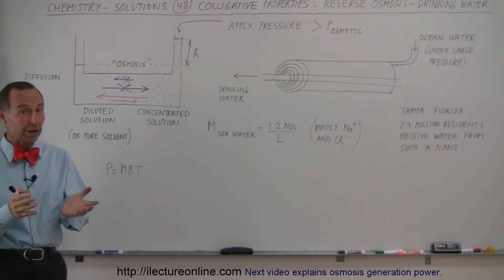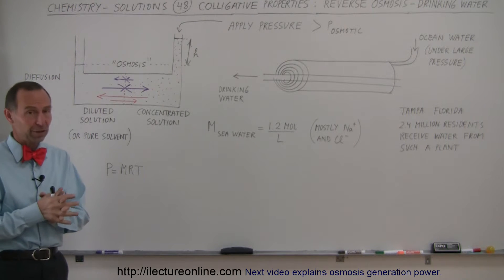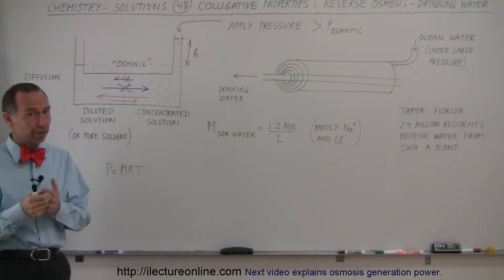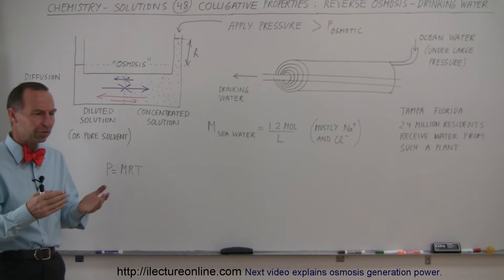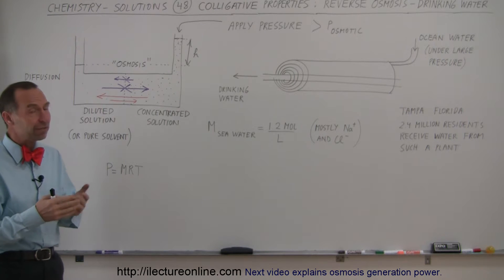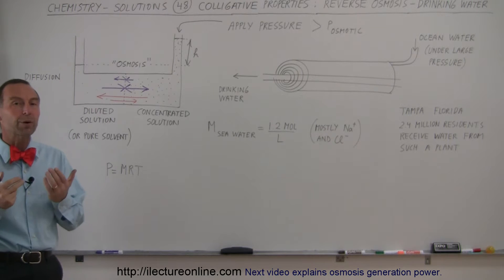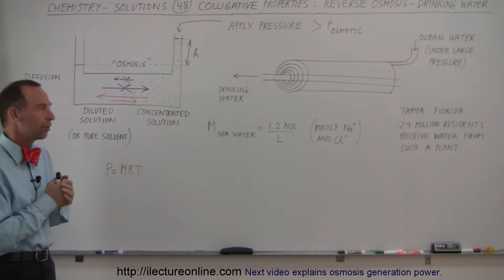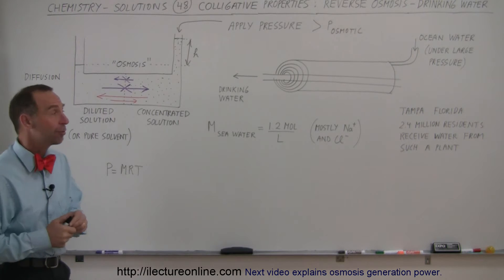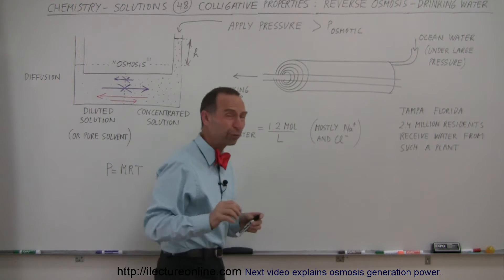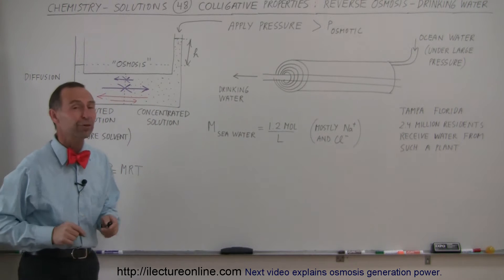And this is a practice that's done in quite a few places in the world, especially a place where energy is abundantly available and fresh water is very scarce, like in desert regions like the Middle East and in places even like in Florida where drinking water can be scarce. Places where we use this process to provide good drinking water. In Tampa, Florida, for example, there's a plant that uses this process where 2.4 million residents receive water from such a plant.